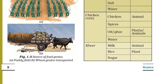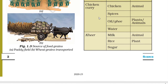Next is chicken curry. For that you need chicken, spices, oil or ghee, and water. Chicken is an animal product — it is obtained from animals. Spices are obtained from plants. Oil and ghee are also plant and animal products. Water is obtained from water bodies.